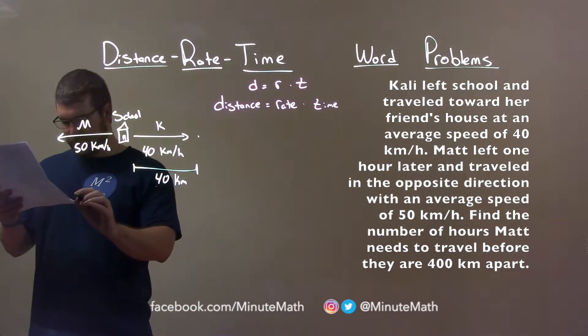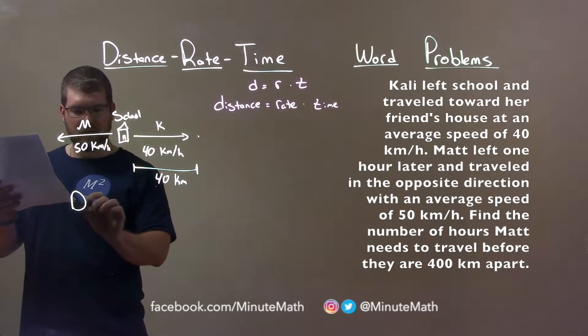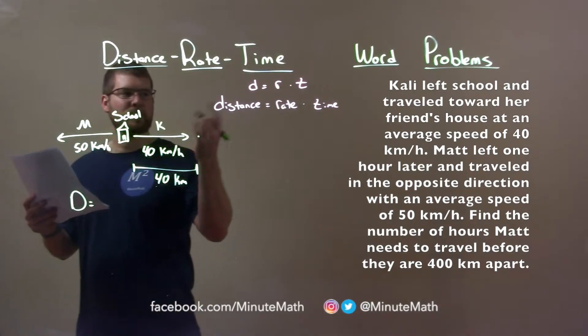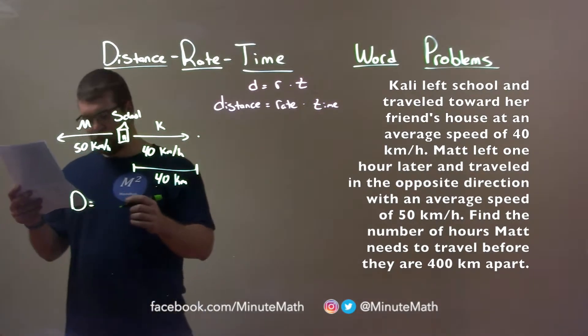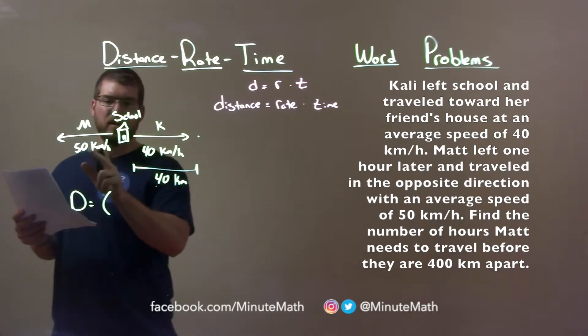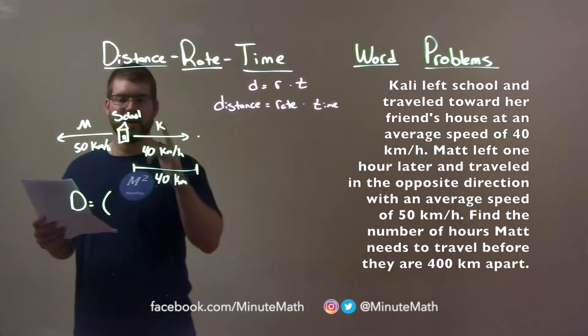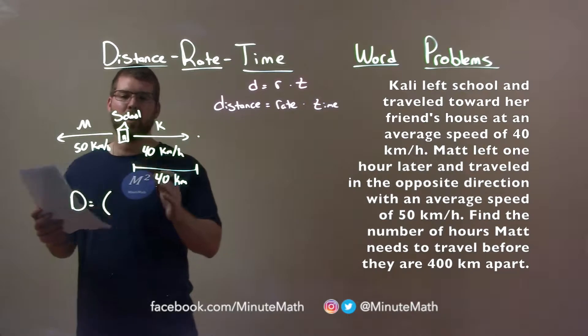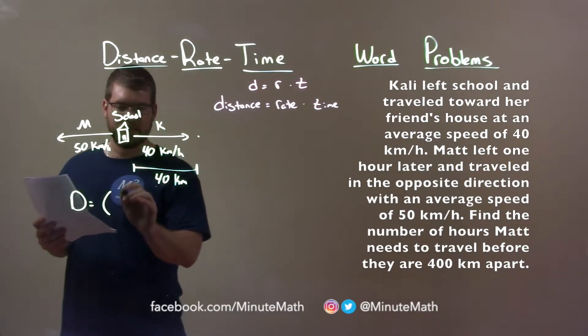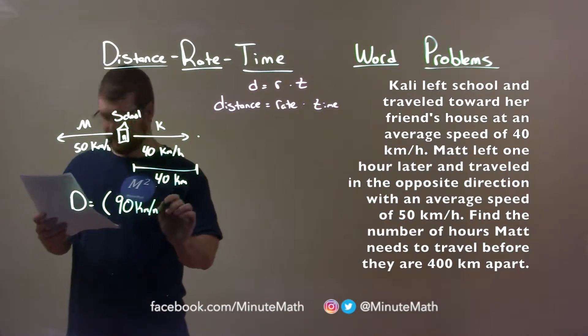So our overall distance here, our overall distance, all right? Since distance equals rate times time, our overall distance, well, is the rate at which they are moving apart, okay? So they're moving apart 50 and 40, so 50 kilometers per hour in one direction, 40 in the other, add them together. They're moving at a distance, getting apart of 90, right? 50 plus 40 is 90. 90 kilometers per hour, okay?